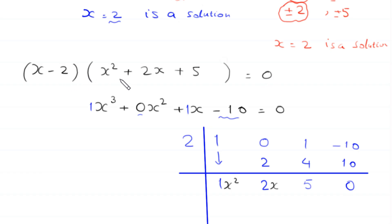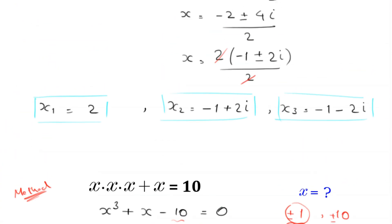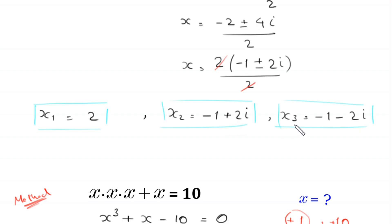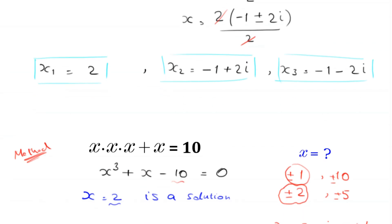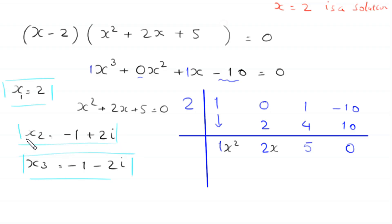Now from these two expressions, we can find the solutions of this equation. We already found that the first value of x is equal to 2, so this is the first solution. To find the 2nd and 3rd solutions, we solve this 2nd degree quadratic equation x squared plus 2x plus 5 equals 0. In the previous method, we already solved this equation and got the solutions: x2 is equal to negative 1 plus 2i and x3 is equal to negative 1 minus 2i. So from this method, we get the same solutions as we got by using method 1.